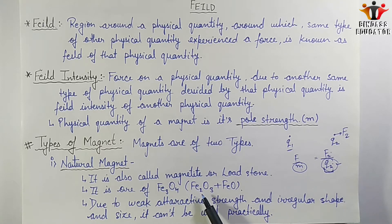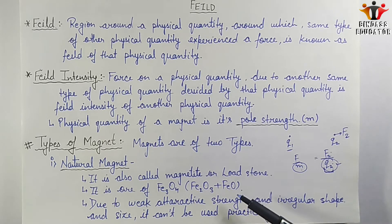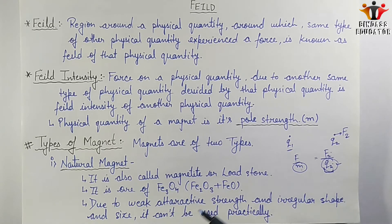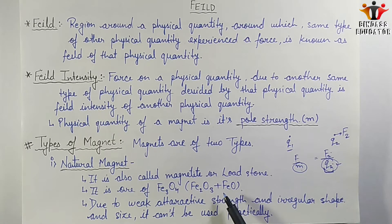Fe3O4 is formed by combining two oxides of iron: Fe2O3 and FeO. These two oxides combine to form Fe3O4, and this iron oxide has a built-in attractive force, which is why we call it a natural magnet. The magnetic nature develops due to the arrangement of electrons in their shells — giving rise to paramagnetic and diamagnetic characters, which you will study in detail in solid state chemistry in 12th standard.